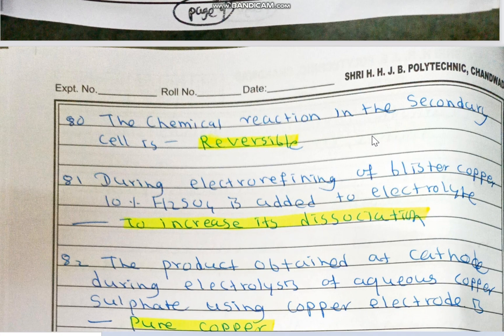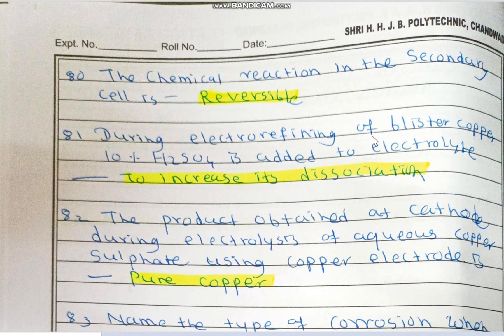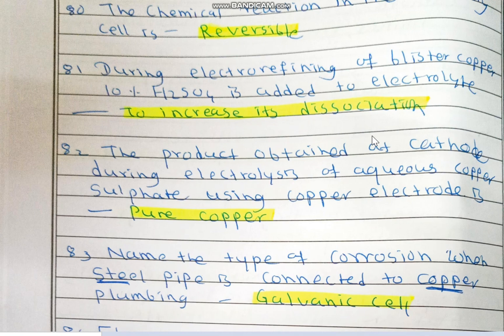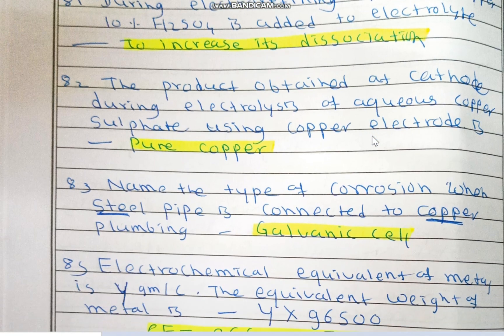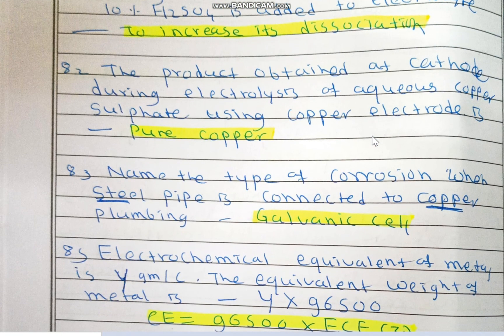The chemical reaction in a secondary cell is reversible. During electrode refining of blistered copper, 10% H₂SO₄ is added to the electrolyte to increase dissociation. The product obtained at the cathode during electrolysis of aqueous copper sulfate solution using a copper electrode is pure copper.